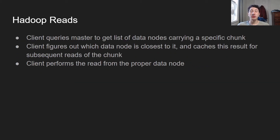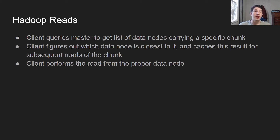In terms of reading in Hadoop, basically the client is going to query the name node to get a list of data nodes carrying the chunk that it wants. It's going to figure out which data node is closest to it — because Hadoop is aware of the rack that the nodes are in, it can determine which one will have minimal network latency. So you choose the best data node to read from. You're going to cache this result on the client in case you want to read that file again — write once, read many times — and then the client's going to go ahead and perform that read.